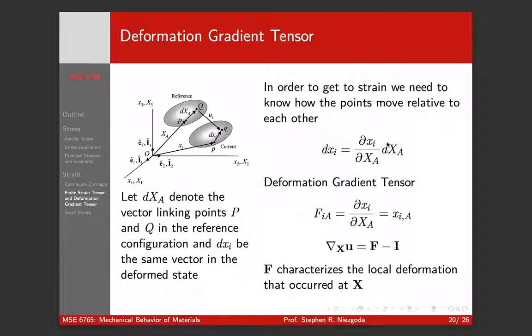What the displacement gradient tells us is how the displacements are spatially spread out in our sample. If we want to get to strain though, we need to know how the points move relative to each other. I need to know is a line segment drawn between two points getting longer or shorter. I also, in many cases, want to know is that line rotating? And that's the information that the deformation gradient gives us.